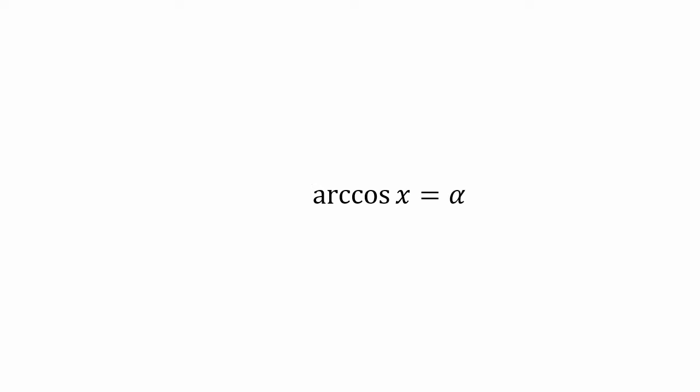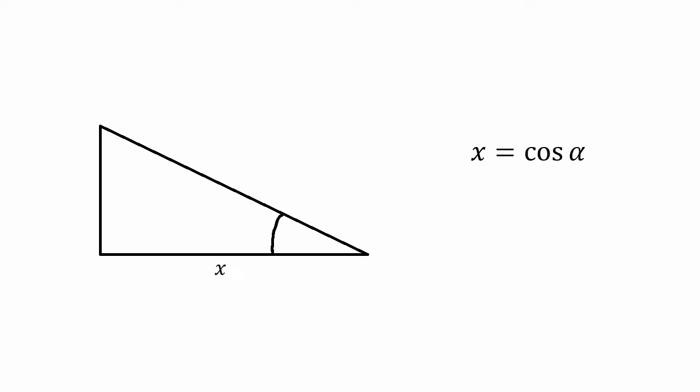So then I could rewrite arccos of x equals alpha as x equals cosine of alpha. And we know that cosine is adjacent divided by hypotenuse. So if I have a right angle triangle like this, I could let this side be x and this side equals 1. And this angle would have to be alpha. And then this makes sense. Cosine of alpha will equal to x.